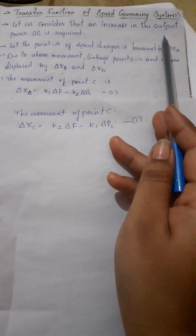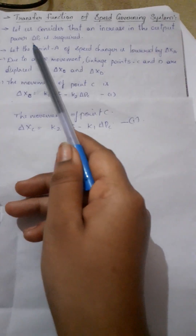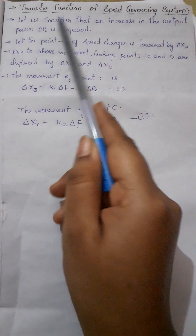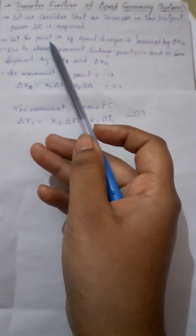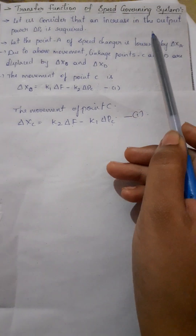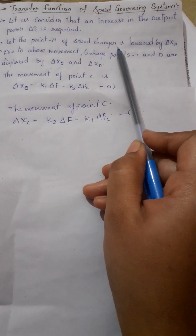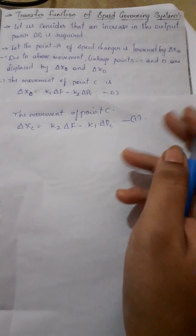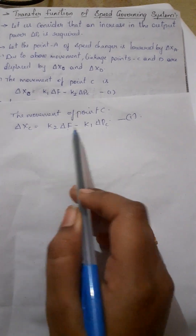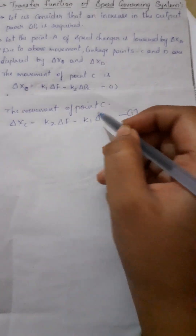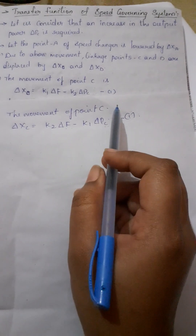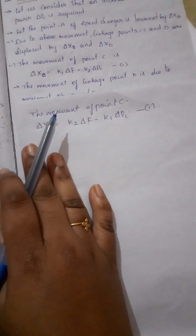We consider δxc = K2·δf − K1·δPc. An increase in the output power δPc is required, so we have to add the power. The point A of the speed changer is lowered by δx, while point B and point D are constant. The equation is δxc = K2·δf − K1·δPc, and this is the point C equation.